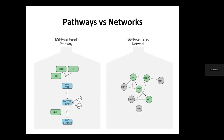Pathways are great at telling biological stories but hard to analyze because they're very heterogeneous, dealing with many different macromolecules interacting in complex ways. Networks are a simplified view of interactions among macromolecules — they have more of a genetic view. Looking at the EGFR signaling example, the pathway view on the left is detailed, while the network view on the right is uniform with just two types of arcs: activators and inhibitors.